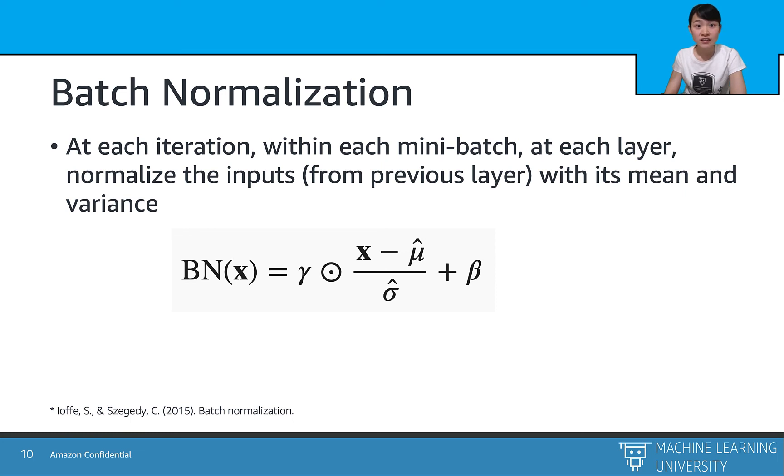And next, it adjusts the scale of the normalized value with two learned parameters, the gamma and the beta. In this way, the input and output is normalized and rescaled to the same mean and variance.